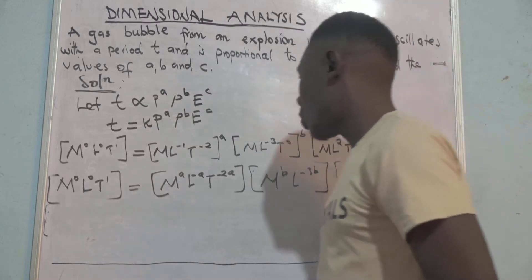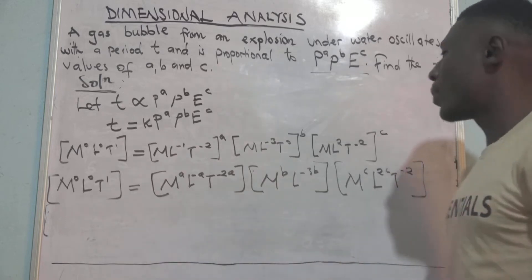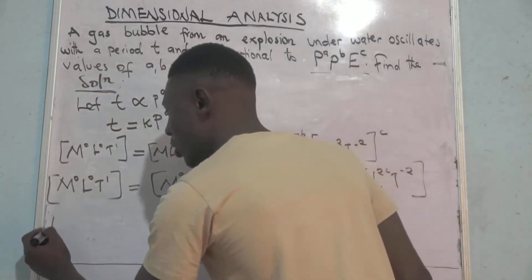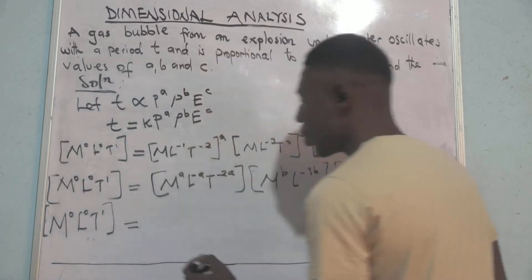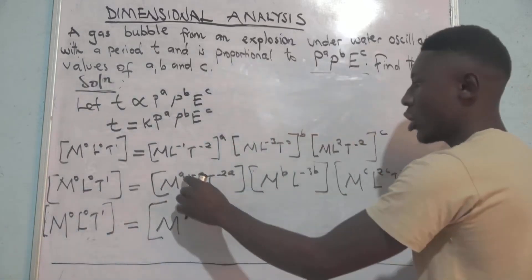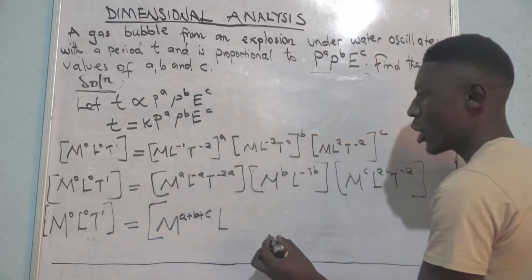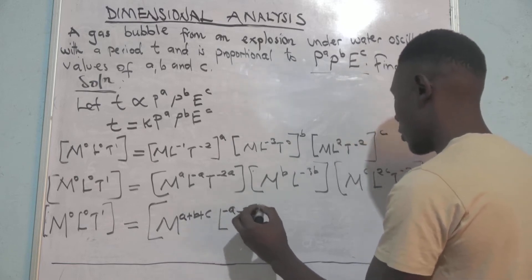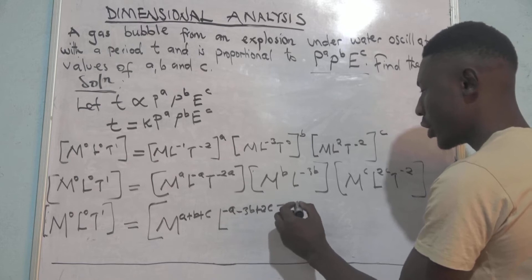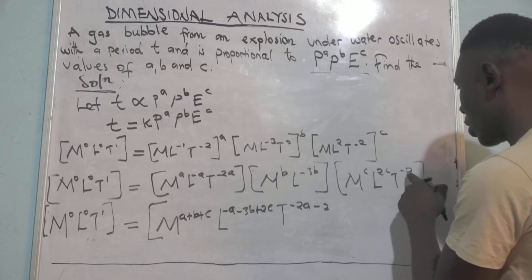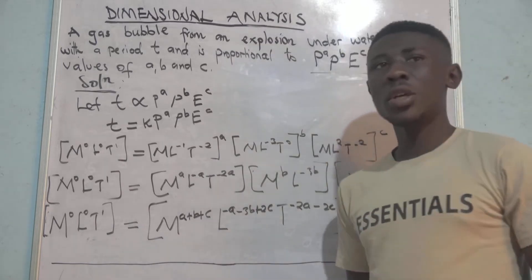Using the rule for exponential functions where bases are the same, we sum the powers. The left-hand side remains M to the power 0, L to the power 0, T to the power 1. On the right-hand side, combining M terms gives M to the power A plus B plus C; combining L terms gives L to the power negative A minus 3B plus 2C; combining T terms gives T to the power negative 2A minus 2C.